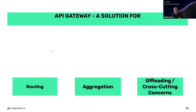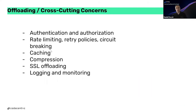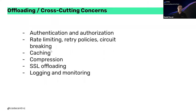The third solution is offloading and cross-cutting concerns. Normally services need authentication, authorization, rate limiting, retry policies, circuit breaking, caching, compression, SSL offloading, and logging including monitoring. These cross-cutting concerns can be placed into the gateway, which then spreads them across all services behind it. We only configure these cross-cutting concerns at one place and provide this information to the services via plugins or add-ons through the gateway.